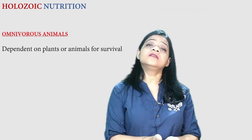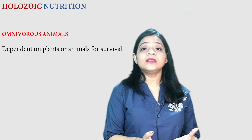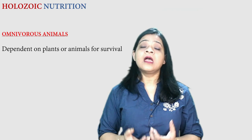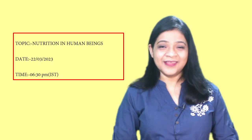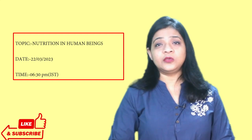Omnivores depend both on plants and animals for survival — human beings are a common example. Human beings take plants as well as eggs or meat for nutritional purposes. In the next video, we will discuss how digestion or nutrition in human beings occurs, which falls under holozoic nutrition.